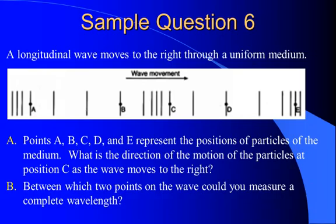Between which two points on the wave could you measure a complete wavelength? Well, I could measure a complete wavelength by taking the same point on two consecutive waves. In this case, that must be between point A and point C. Those look like the same point on consecutive waves. So that would be our wavelength between A and C.